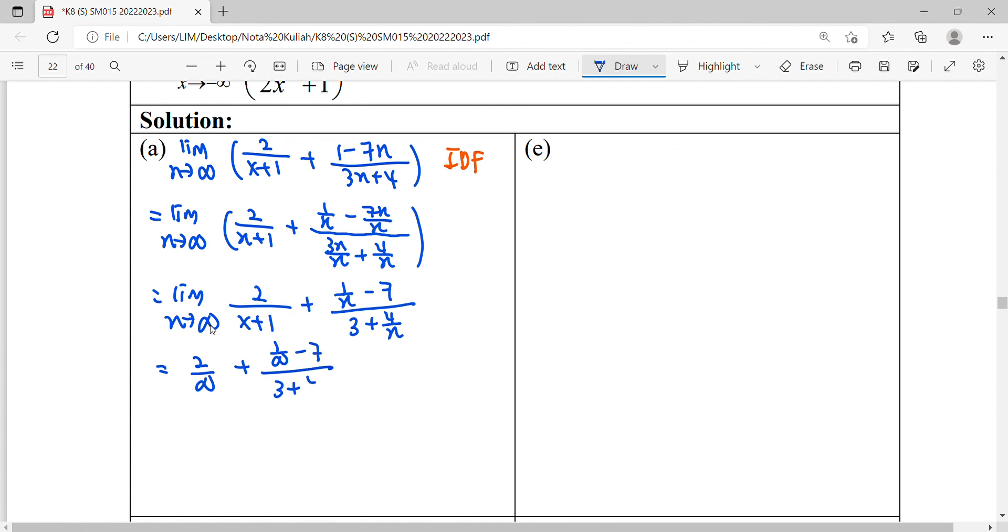A number divided by infinity is zero. So zero minus 7 equals negative 7, then 3 plus zero equals 3. This gives you negative 7 over 3. This is how to do limit at infinity, limit as x approaches infinity.